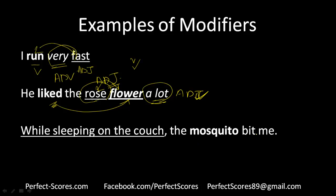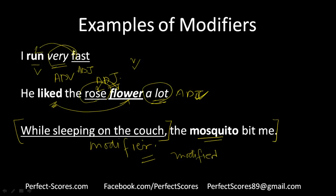'While sleeping on the couch, the mosquito bit me' — this is again an example of a modifier error. It should be 'while sleeping on the couch, I was bitten by a mosquito.' The entire underlined phrase is the modifier, and the correct word being modified should be 'I.' There has to be a very clear relation and link between a modifier and the word or phrase being modified — that is the basic rule.